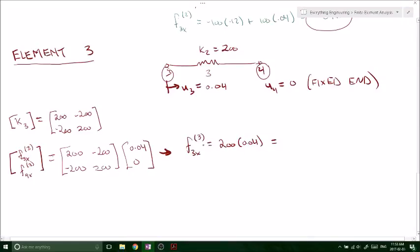So the internal force at node 3, due to member 3, is 8 kilonewtons. And now, the internal force at node 4, due to member 3, is equal to negative 8 kilonewtons.